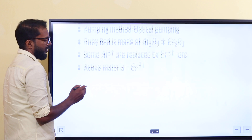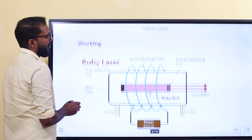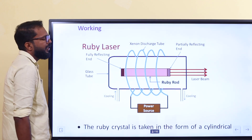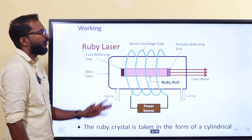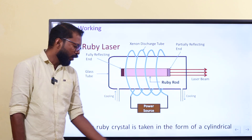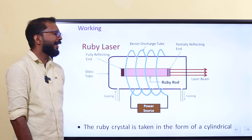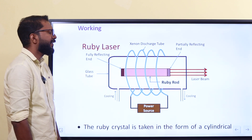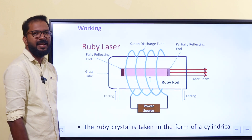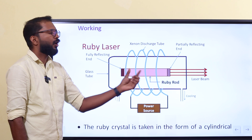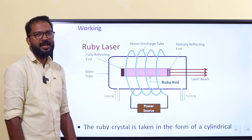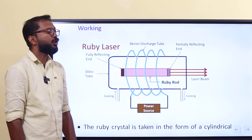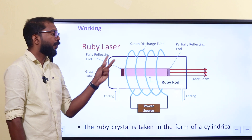Let's look at the details. How does a ruby laser work? This is the ruby laser — let me explain each component. The ruby rod is placed in the center. We use aluminum oxide and chromium oxide as components.